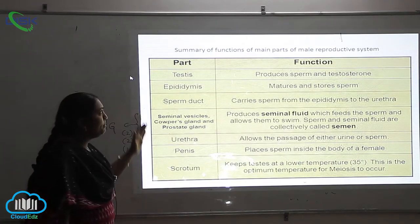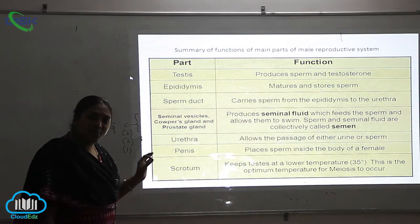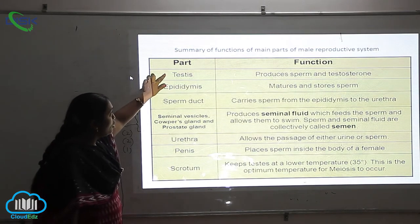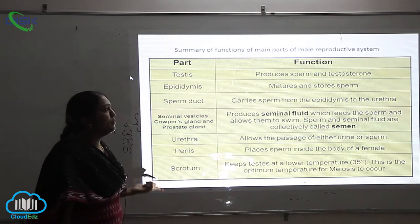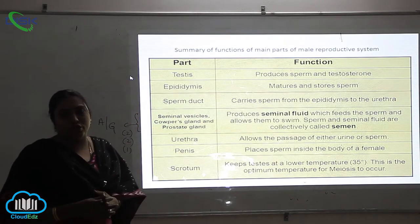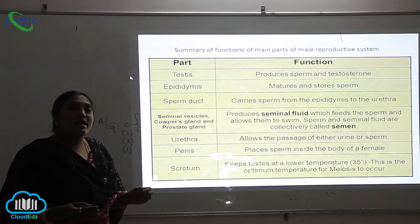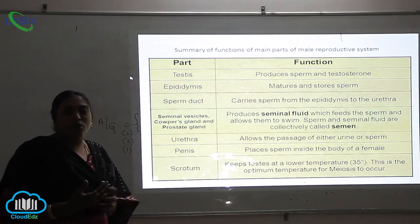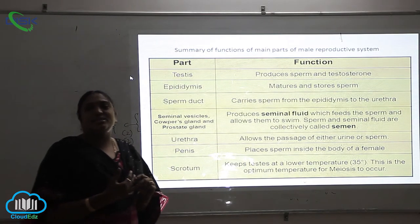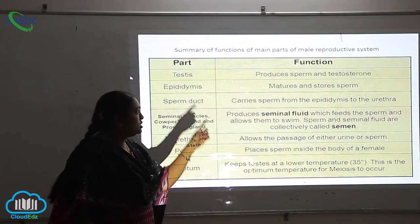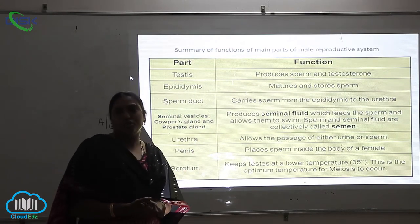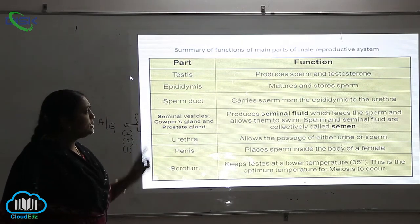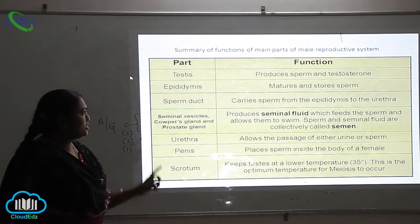The first part is the testis. The main function of the testis is it produces the sperms and testosterone. The male ego, or the rigidity and all these traits which are present in human males, is dependent on this particular hormone called testosterone.